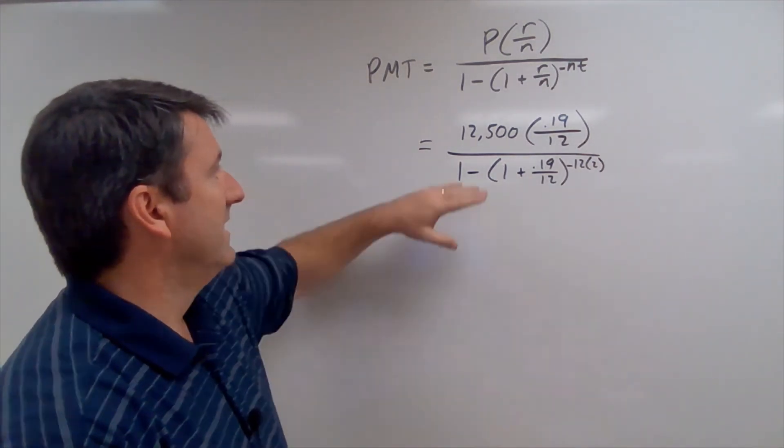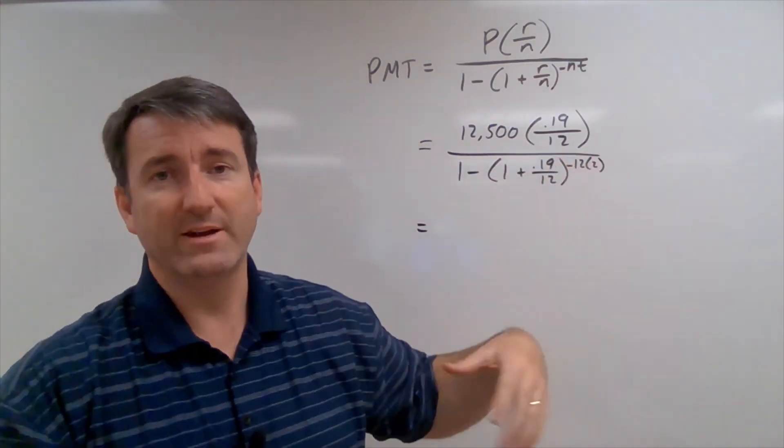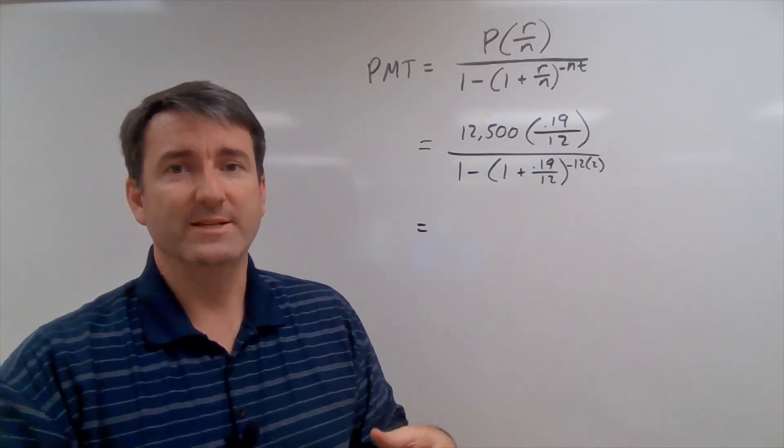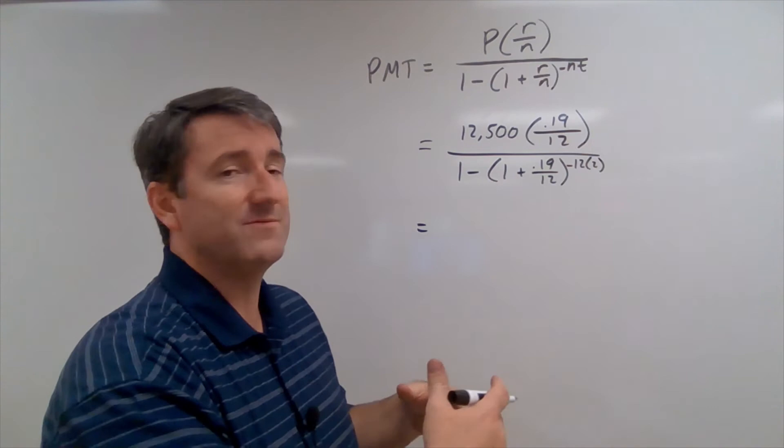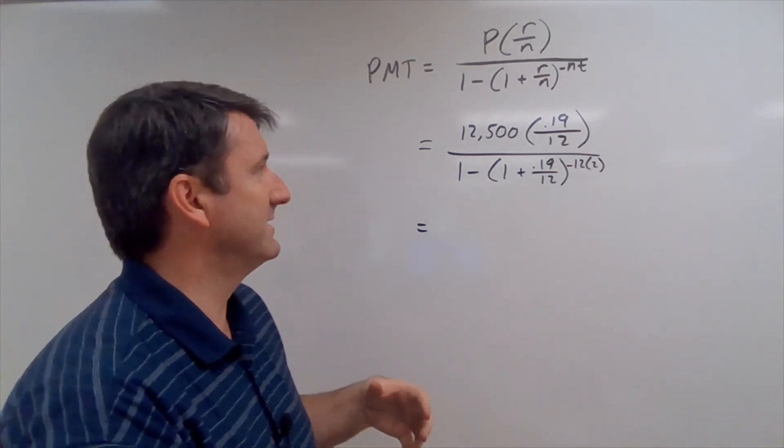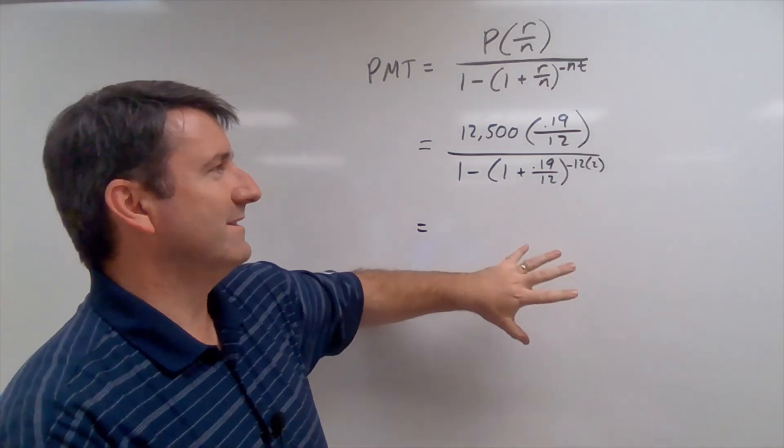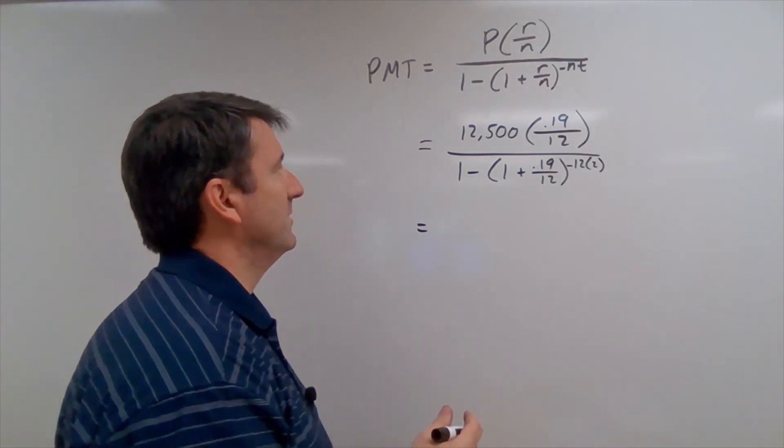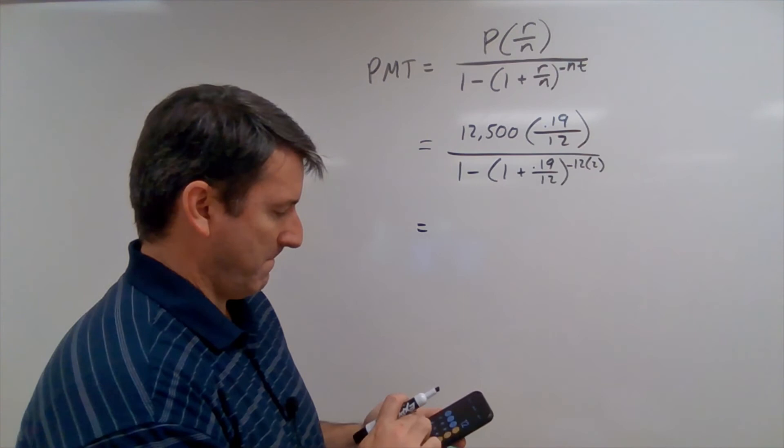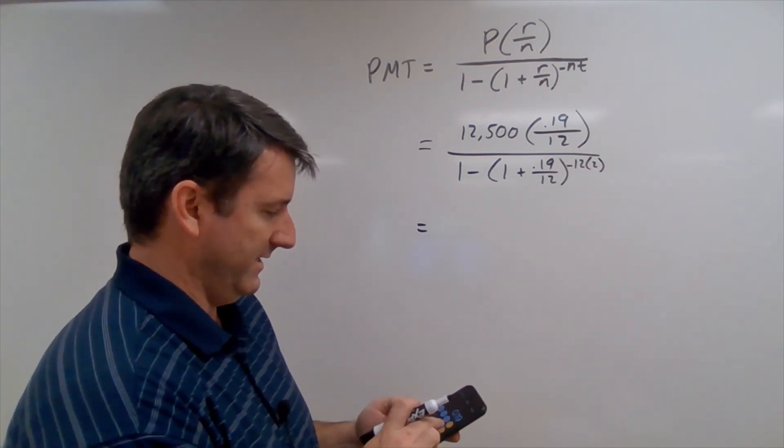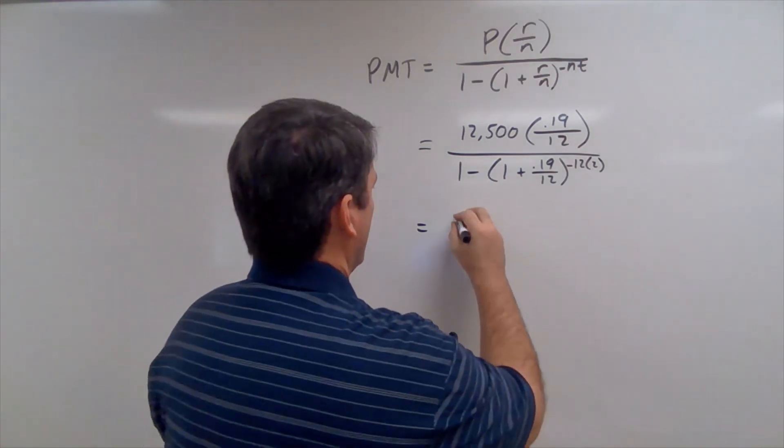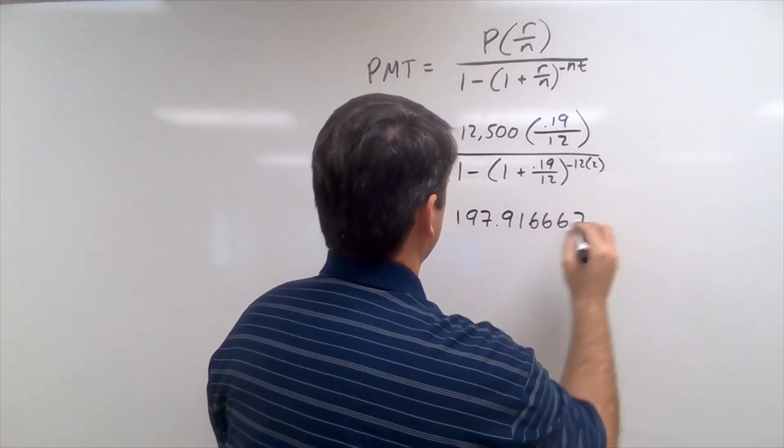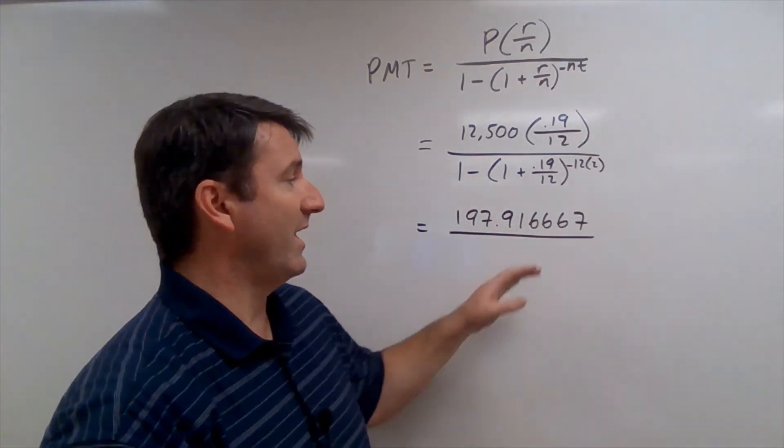So what I'm going to do is I'm going to calculate the numerator and the denominator separately, and then I'll divide. The one thing you've got to make sure of when you're doing that, though, is to carry this out to at least five or six decimal places, so that you're not getting significant rounding error by rounding in the middle of our calculation. So 12,500 times 0.19 divided by 12 is going to be 197.916667.